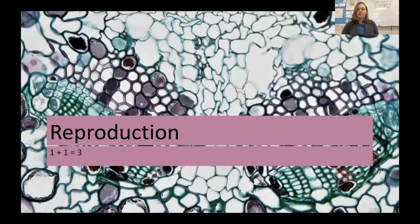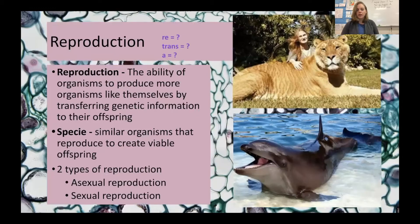We have talked about reproduction already with mitosis and meiosis. Remember we have two kinds: sexual and asexual, and we are going to dive into those a little bit deeper today. Reproduction is the ability of organisms to produce more organisms like themselves by transferring their genetic information from parents to offspring, and we have a couple of different processes in which that can occur.